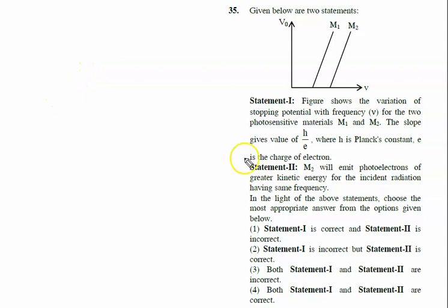Given below are two statements. The figure shows the variation of stopping potential with frequency for two photosensitive materials M1 and M2. The slope gives the value of H by E, where H is Planck's constant and E is the charge of the electron. Statement says M2 will emit photoelectrons with greater kinetic energy.